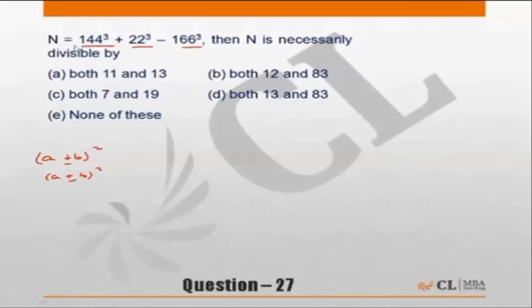Now let us look at this number. If I say 144 equals a, then I can say N which the question says is 144 cube plus 22 cube minus 166 cube.